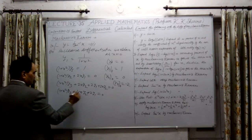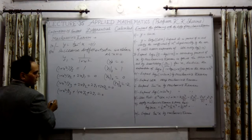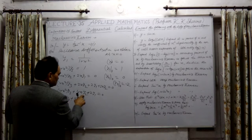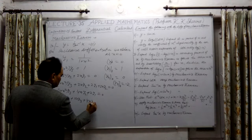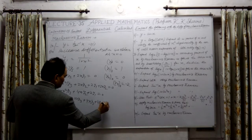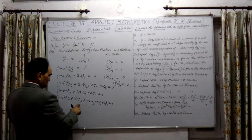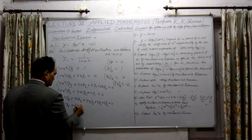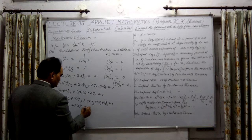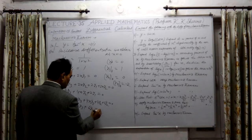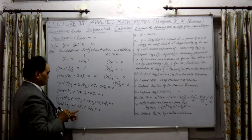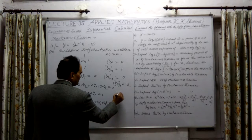Now further differentiating to find y4: 1 plus x squared into y4, plus twice x into y3, plus 4x into y3 plus 4 into y2 plus 2 into y2 equal to 0. Similar terms give: 1 plus x squared into y4, plus 6x into y3 plus 6 into y2 equal to 0. y3 is involved giving 0, y2 is 0, so y4 at 0 is 0.